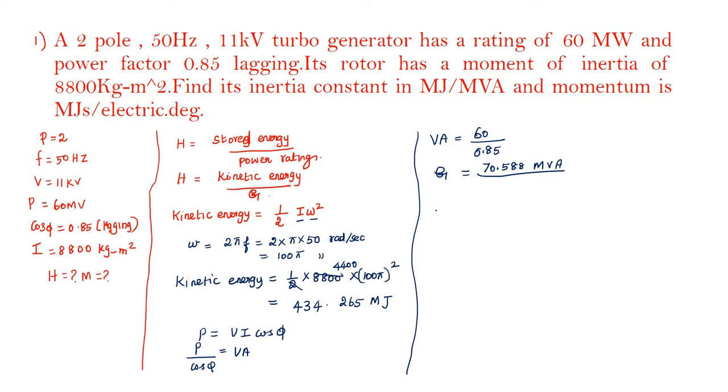Next, I am going to find out the value H. What is H? Kinetic energy is 434.26. G is the power rating, that is 70.588. What is the answer? 6.152. The unit is mega joule per megavolt ampere.